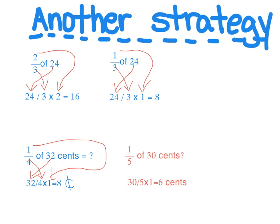Notice I had to put my label on there because this one's money. And then we have one-fifth of 30 cents. So again, I'm going to do 30 divided by five times one. It's going to give me six cents.